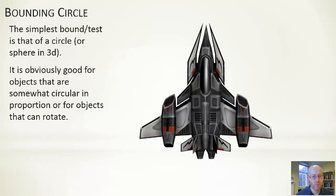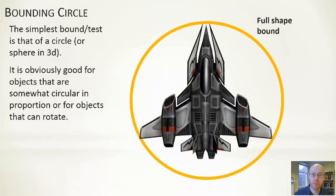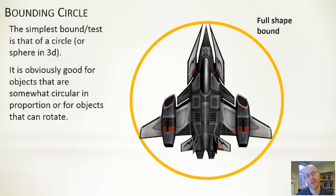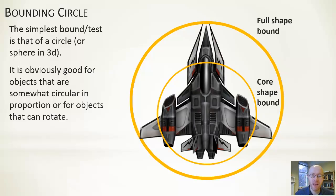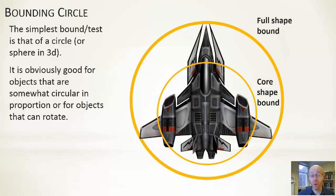There's a full-shape bound where we create a circle centered on the object that encapsulates all of it — but we get a bit of extra space. If the object rotates it still stays within the bound, so the bind works irrespective of rotation. Alternatively, we could use a smaller bound — slightly off-center — capturing more of the core of the ship. If bits are sticking out, we assume it doesn't really matter. If the core gets hit, we take corrective action. So there's a range of options for how large you want the bound to be.